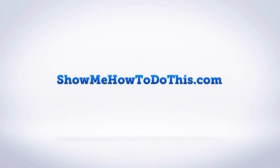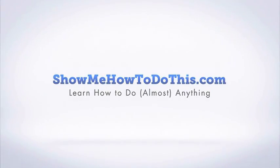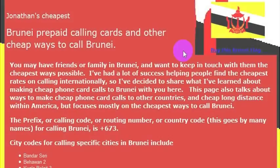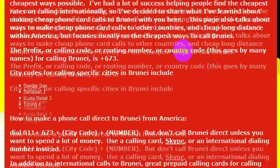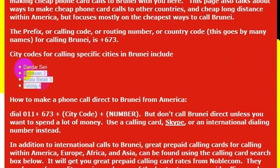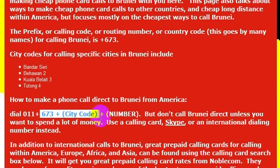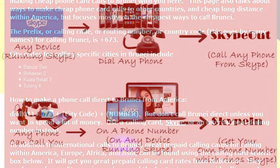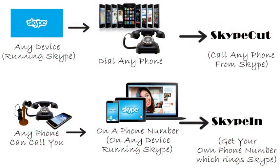If you are looking to make an affordable phone call to Brunei, I don't recommend calling directly, but if you wanted to, here's how you would do it. You would simply pick up the phone, dial 011 plus 673, and then the city code you were trying to call, which is probably included in the number that you've been given. The country code for Brunei is 673.